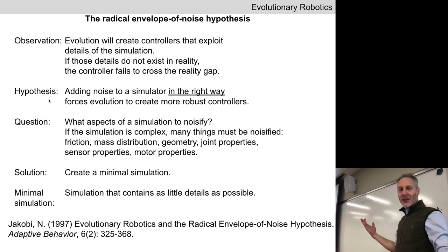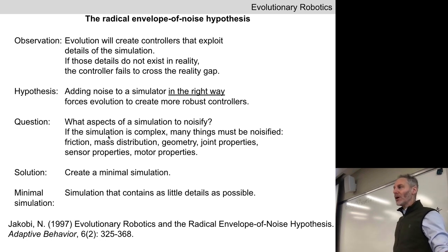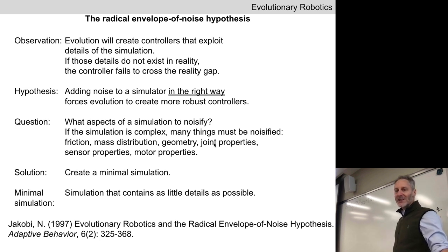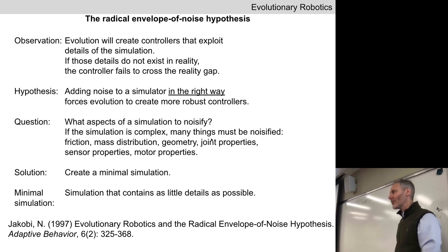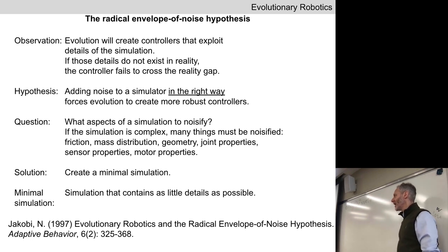There's a question that arises: which aspects of the simulation do we noisify? The more complex the simulator, the more things we have to decide to noisify or not — friction of the ground, the mass distribution of the robot's body, its geometry, the geometry of the robot itself, the properties of the joints, sensors, motors, batteries, and on and on. The more we want our robot to do, the more complicated a simulator we need, and the more decisions we need to make about what to noisify.